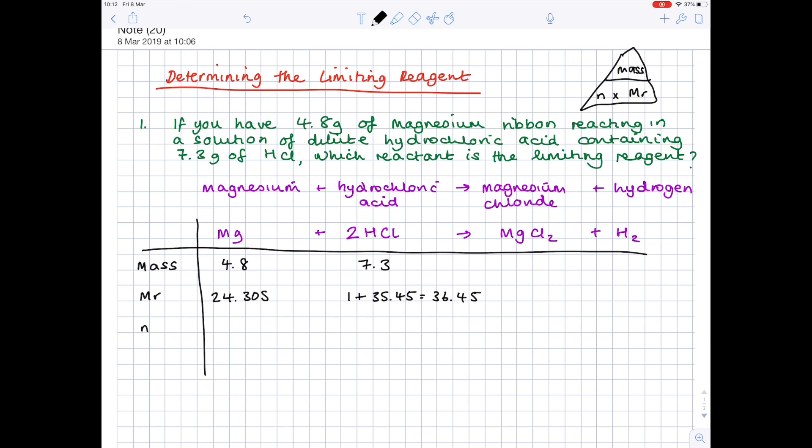Then we want to work out the number of moles. And up here, I've written out the formula triangle, which you should be aware of already. And that shows you that number of moles is given by mass divided by MR. So let's do that for magnesium now. It doesn't matter if you do it for hydrochloric acid first or magnesium, just pick one, work it out. So you do 4.8 divided by 24.305 to get the number of moles of magnesium, which is 0.19749. Now, at this point,